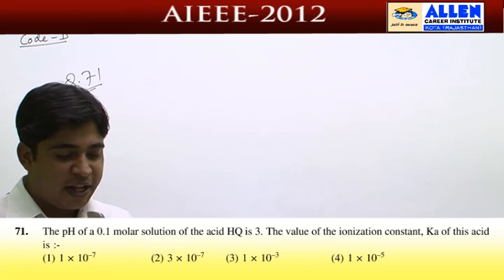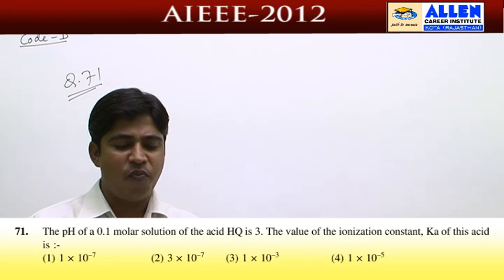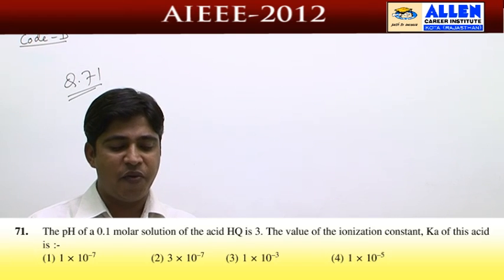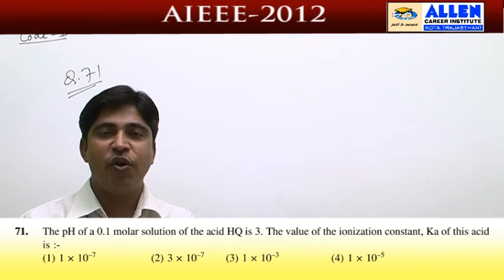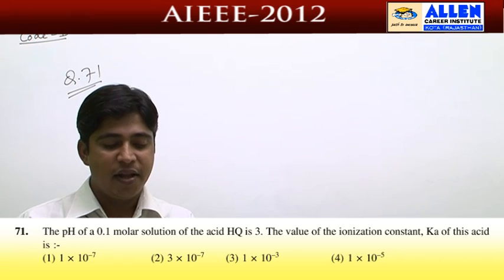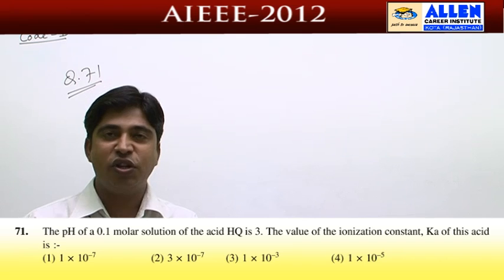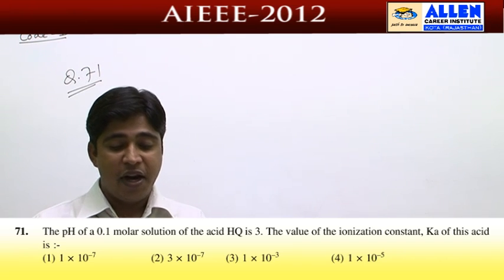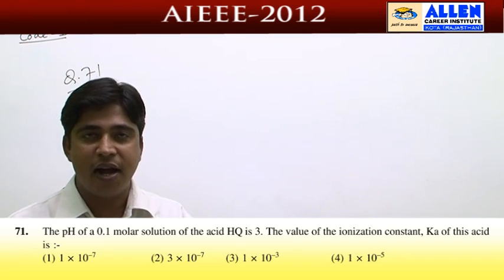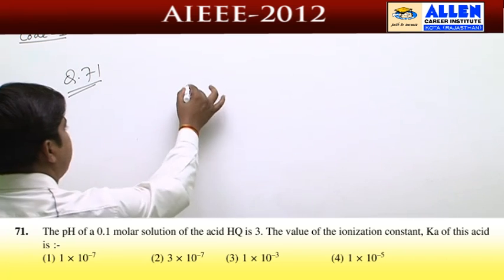Next question, number 71. The pH of a 0.1 molar solution of the acid HQ is 3. The value of the ionization constant Ka of this acid is — this is a very easy question. We need to find the dissociation constant.